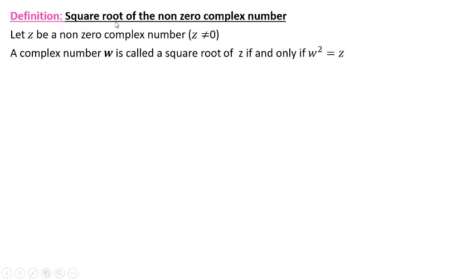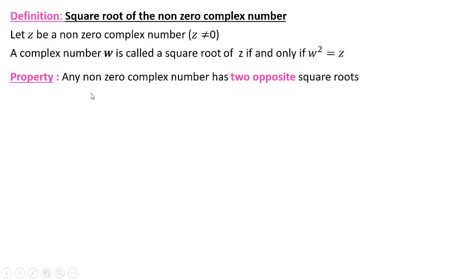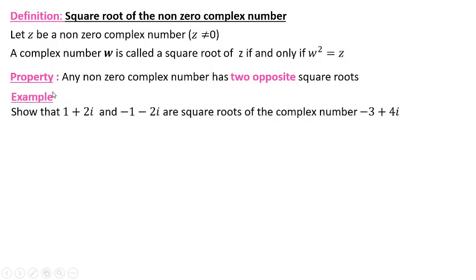Property — definition of a square root: let Z be a non-zero complex number. A complex number W is called the square root of Z if and only if W squared equals Z. Property: any non-zero complex number has two opposite square roots.